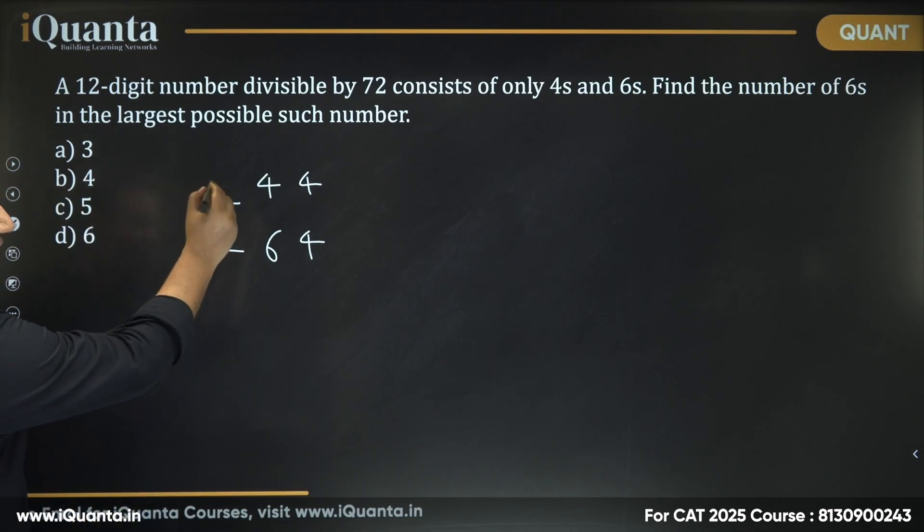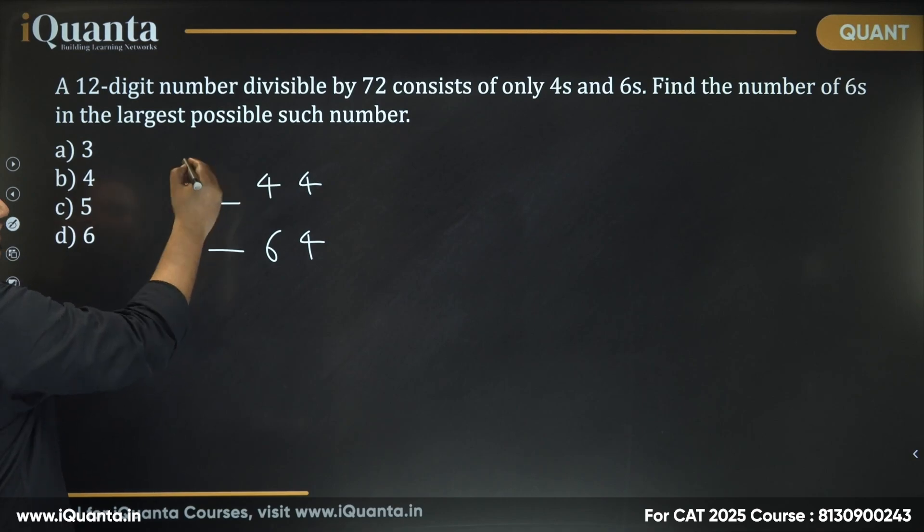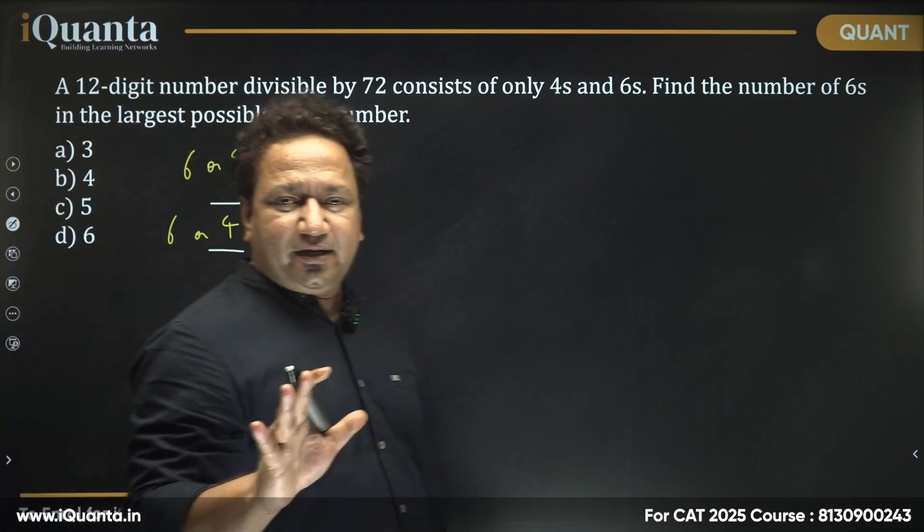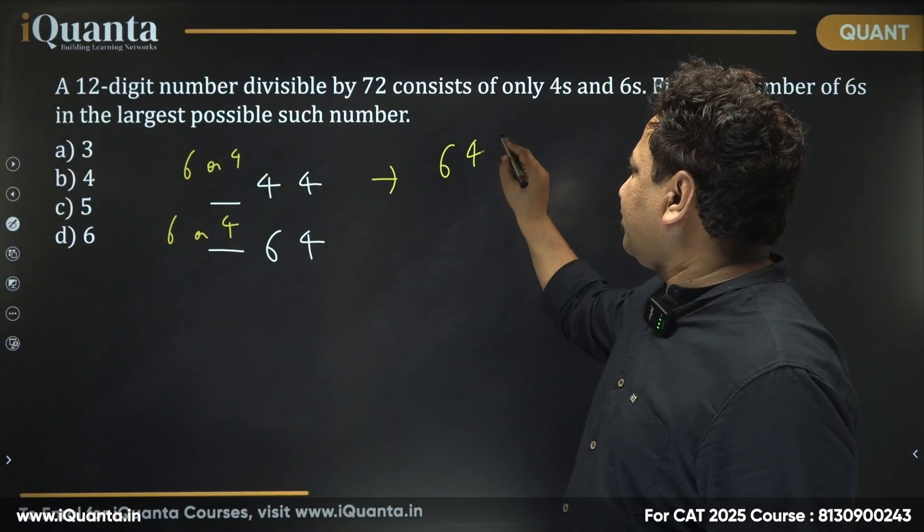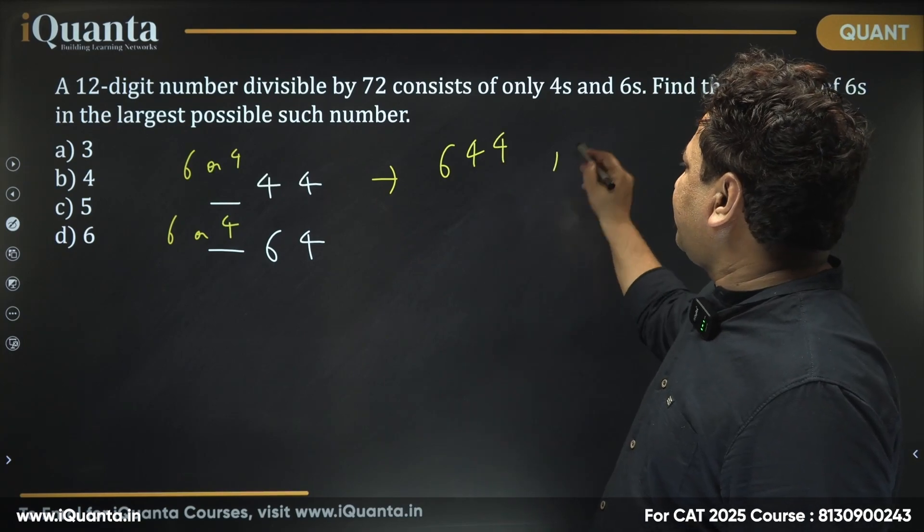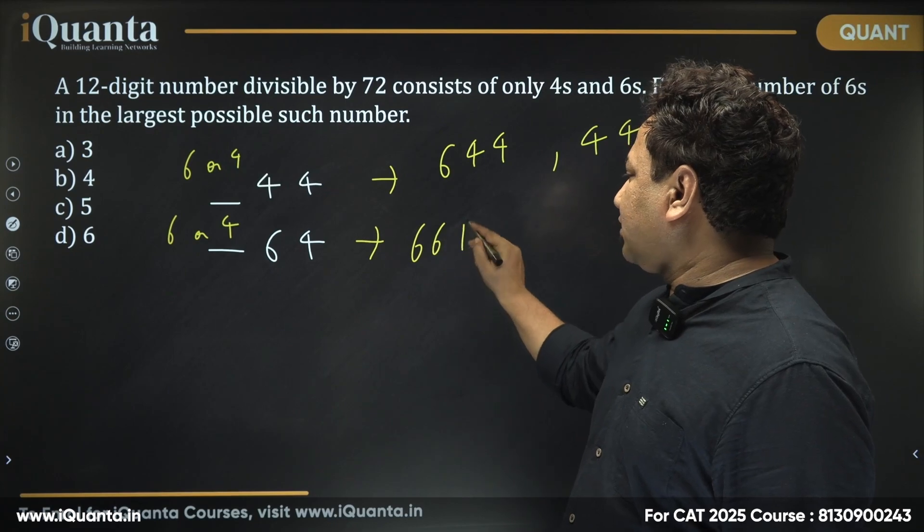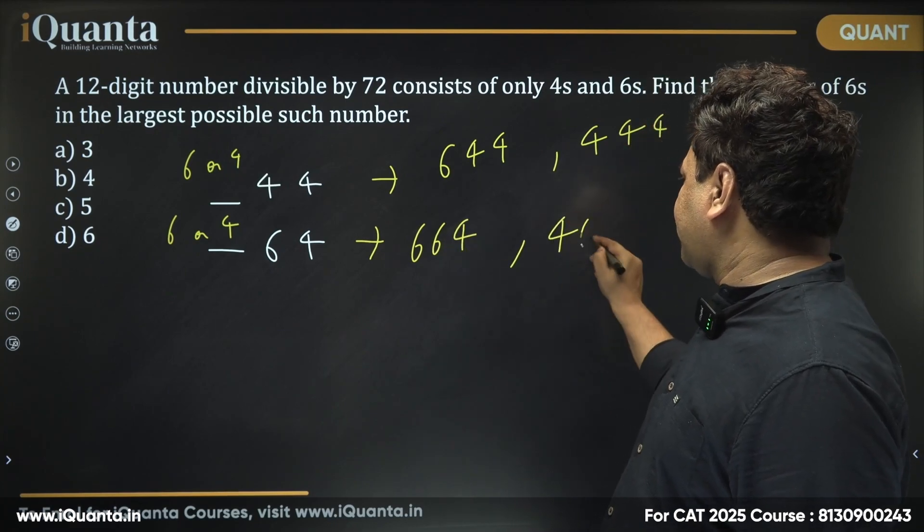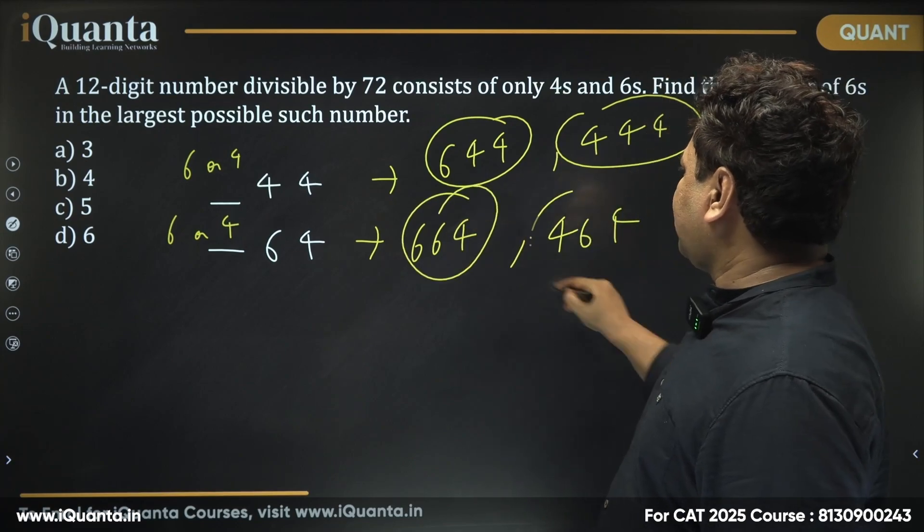Let's check both of them. I need to put something here. It can be 6 or 4. I'll be putting 6 or 4 here and check which one, for which one it is a multiple of 8. So here if I put 6, 4, 4, that is the number I got. When I put 4, I got 444 as the number. Here if I put 6, I'll get 664. If I put 4, I'll get 464 as the number. I have to check which of these is a multiple of 8.